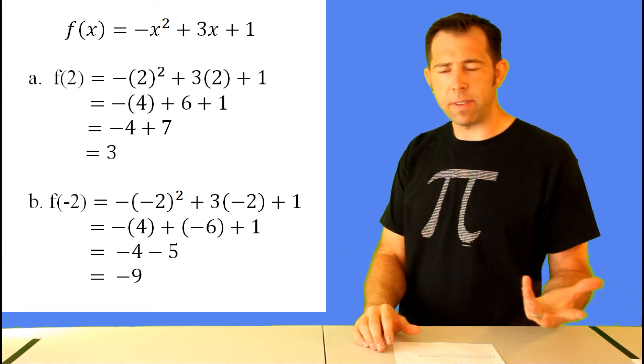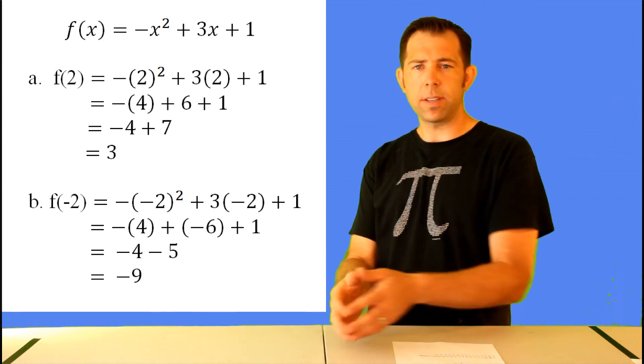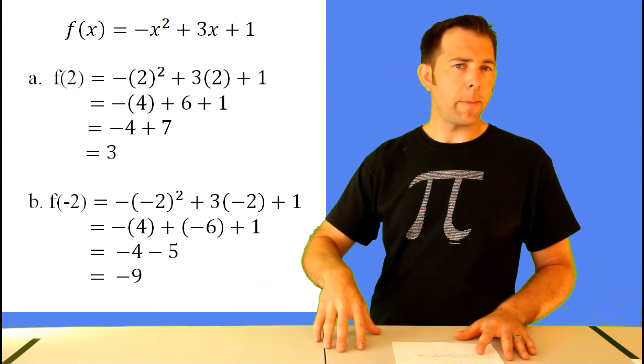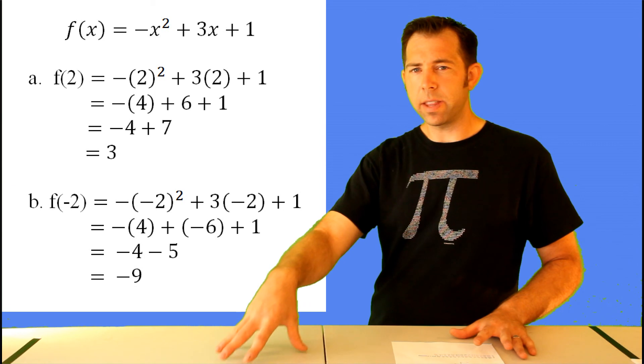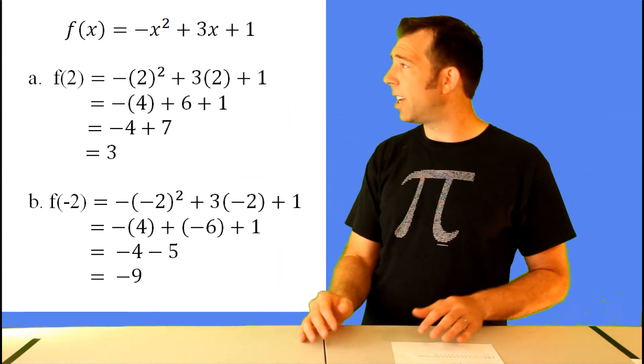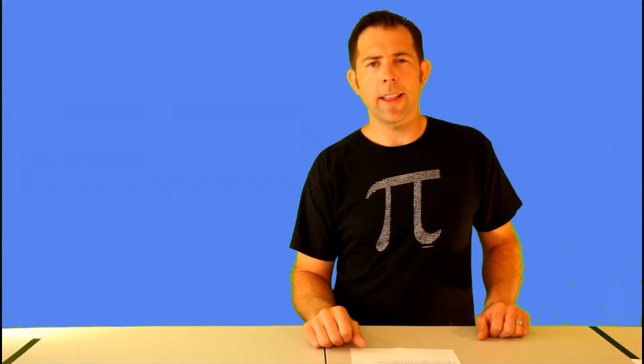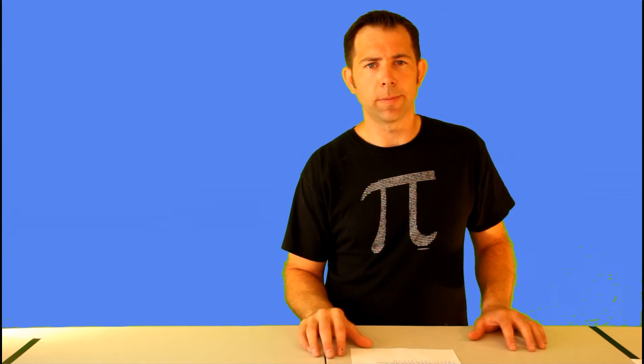For the second one, f of negative two, same idea. When you square the negative two, you do that first, you get positive four, you take the opposite, and you get negative four. So the only thing that changes in the second one is that we get negative six in the middle instead of positive six. So in this case, we get negative four minus five, which is negative nine. All right, that's it for this lesson. I'll see you in the next one.